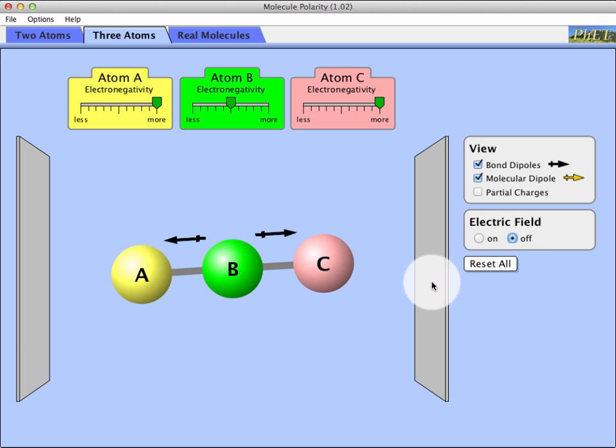So your challenge is to think about a couple of things. I want you to think about if it's possible for a molecule to have covalent bonds, purely covalent bonds, and still be a polar molecule. And conversely, I want you to think about is it possible for a molecule to have polar bonds and be polar, or have polar bonds and be nonpolar.